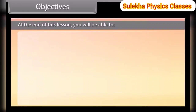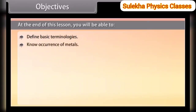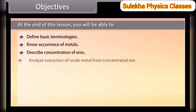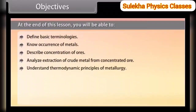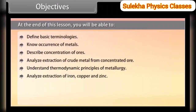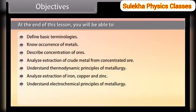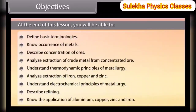Objectives. At the end of this lesson, you will be able to: define basic terminologies; know occurrence of metals; describe concentration of ores; analyze extraction of crude metal from concentrated ore; understand thermodynamic principles of metallurgy; analyze extraction of iron, copper, and zinc; understand electrochemical principles of metallurgy; describe refining; and know the application of aluminium, copper, zinc, and iron.